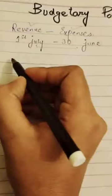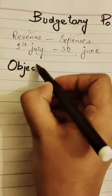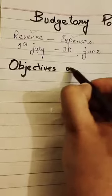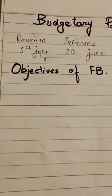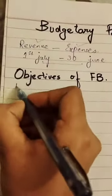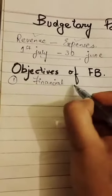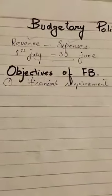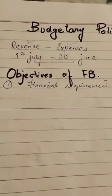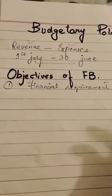What are your targets? The first objective is that we have to complete our financial requirements. In the year, we have to collect the revenue that we can complete. We definitely need to complete our financial requirements so that we can cover expenses like electricity bills and other costs.